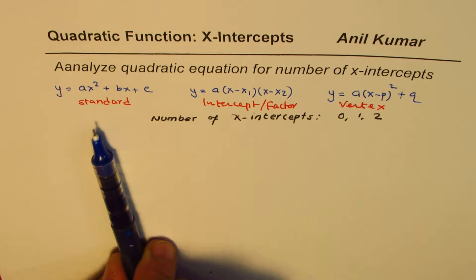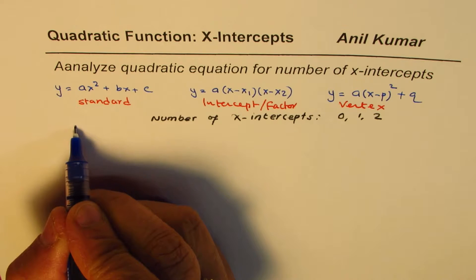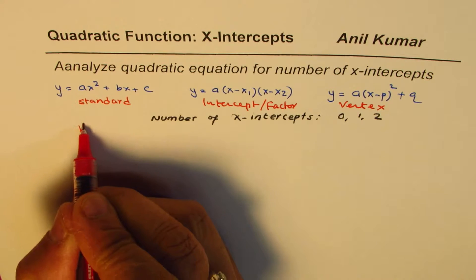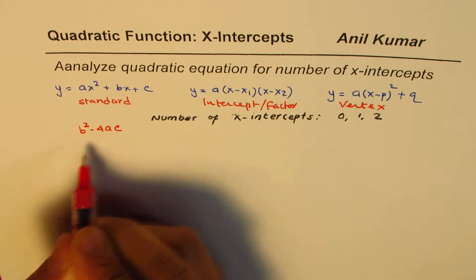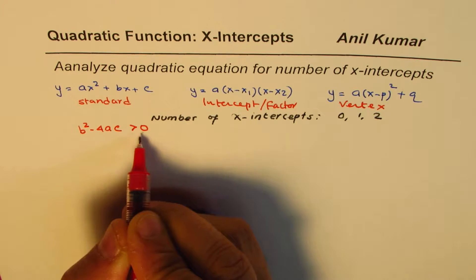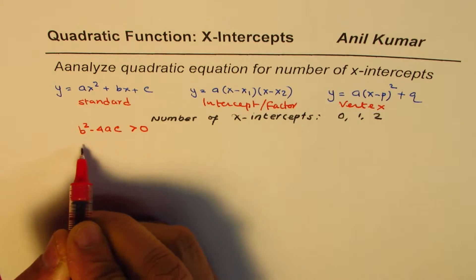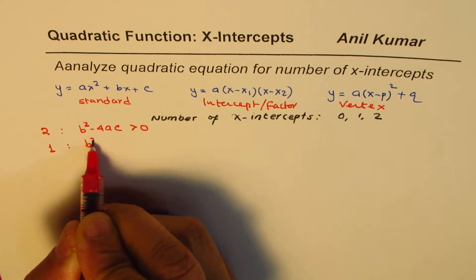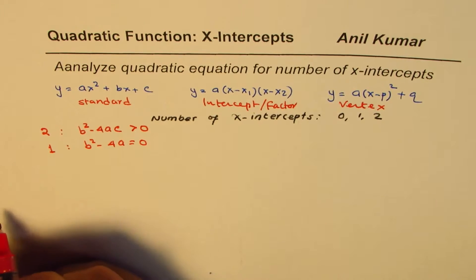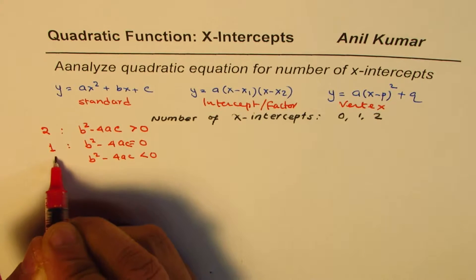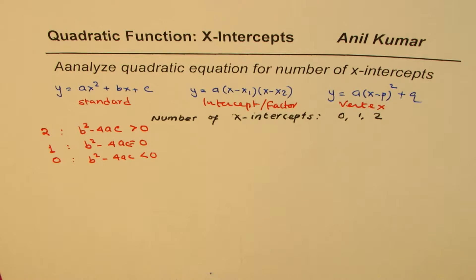If you are given the equation in standard form, you have to use the discriminant B² - 4AC. If B² - 4AC is greater than 0, then we have 2 x-intercepts. If B² - 4AC equals 0, we have 1 x-intercept. And if B² - 4AC is less than 0, then we have 0 x-intercepts.